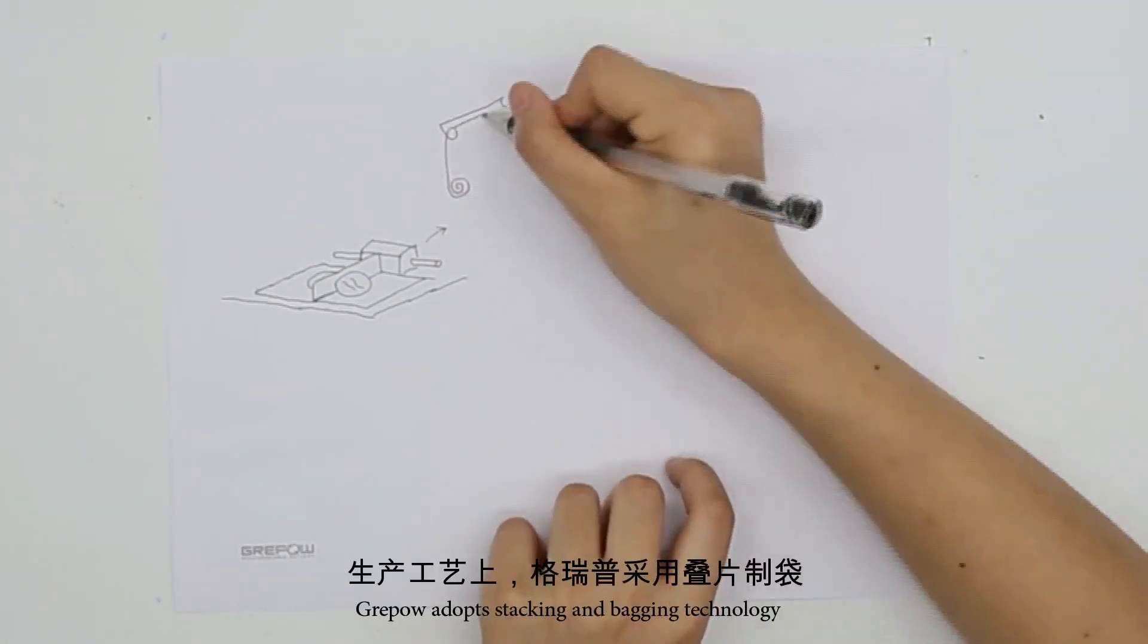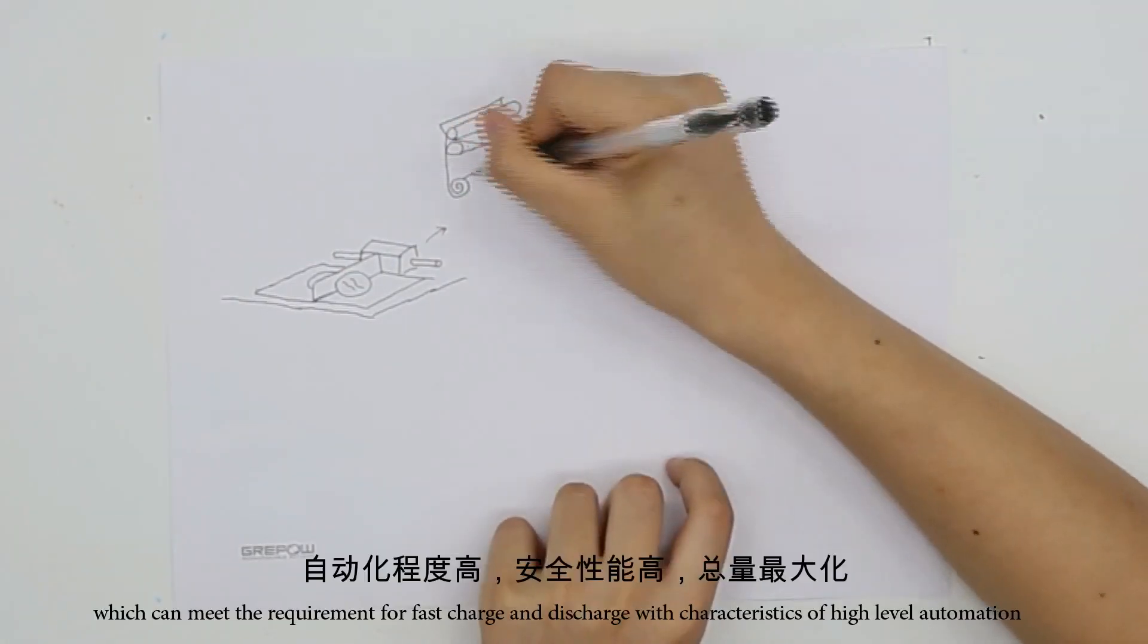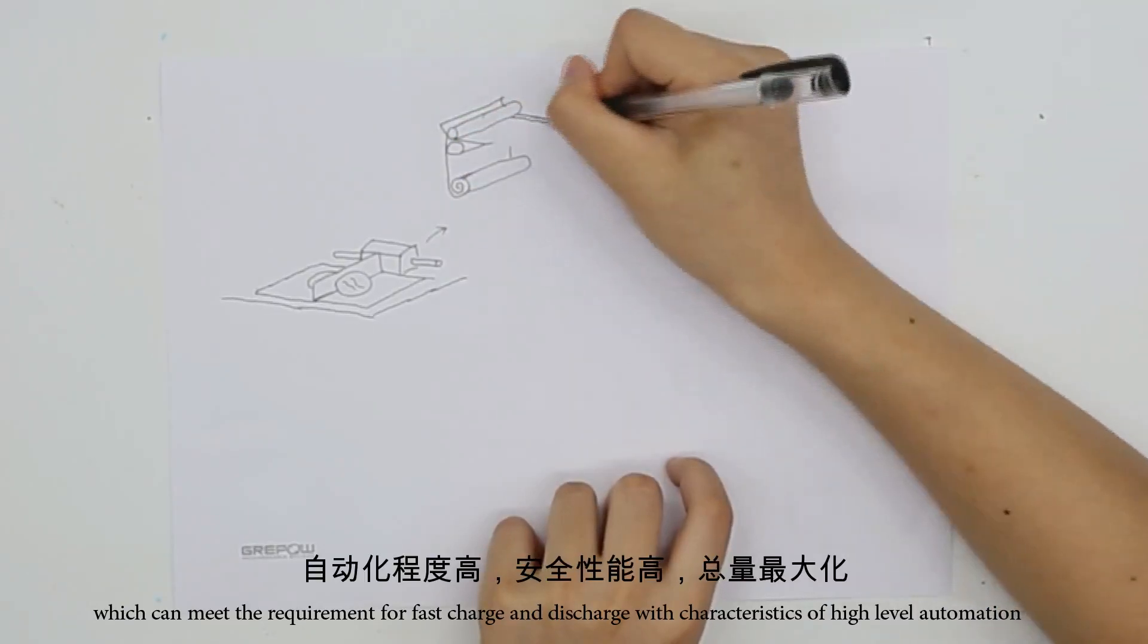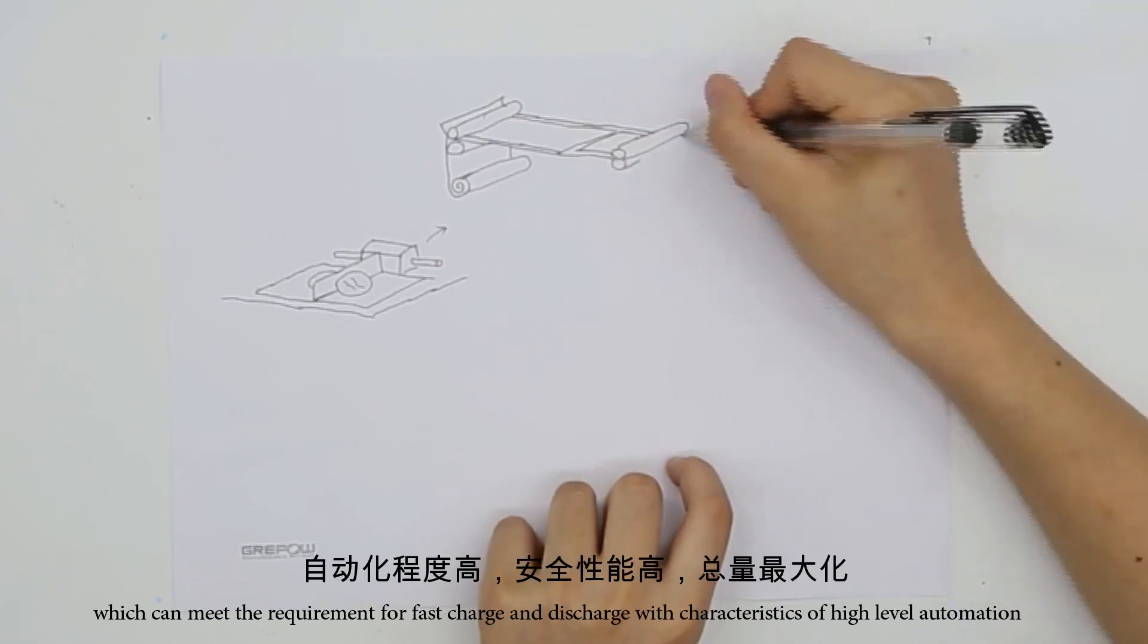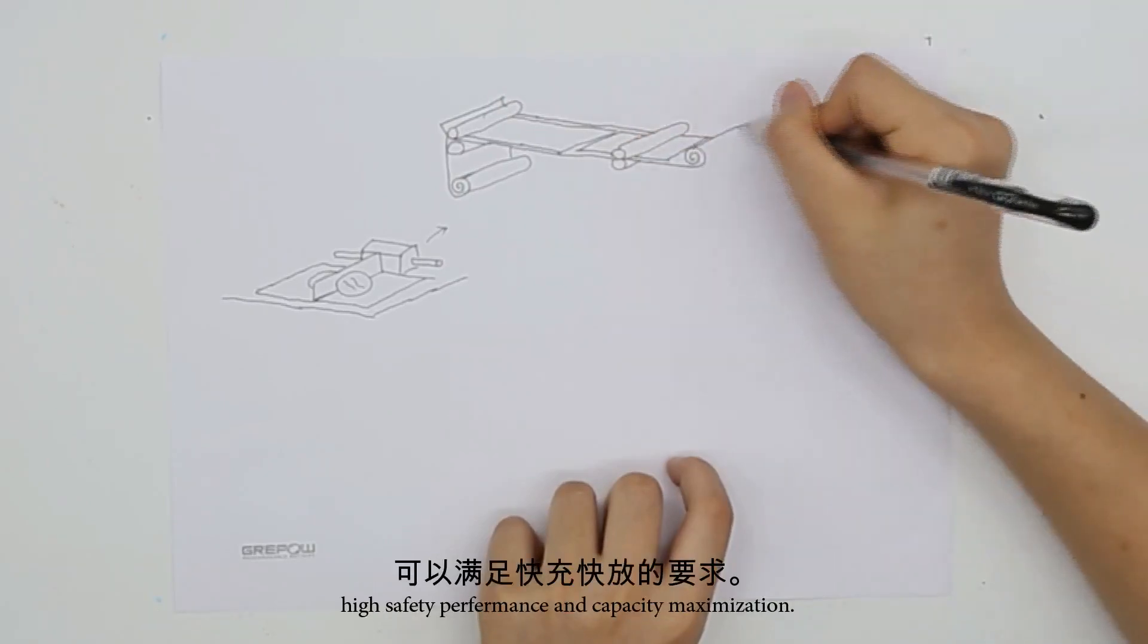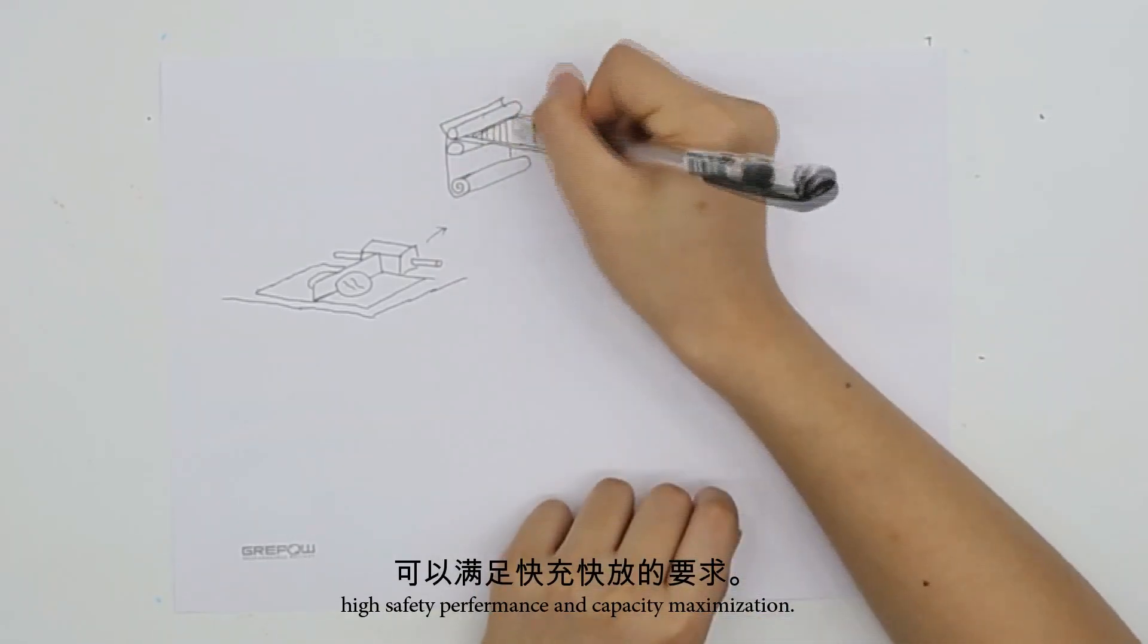Graypulp adopts stacking and backing technology which can meet the requirement for fast charge and discharge with characteristics of high level automation, high safety performance, and capacity maximization.